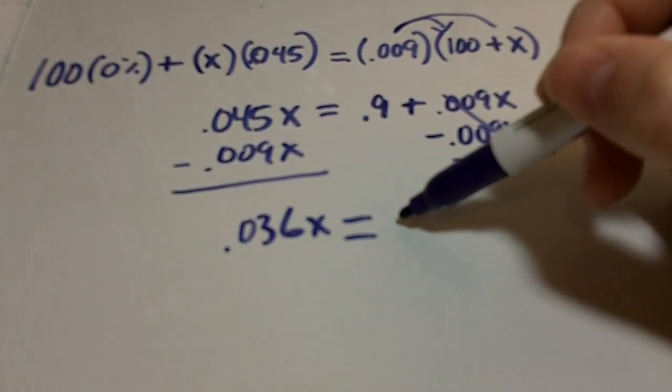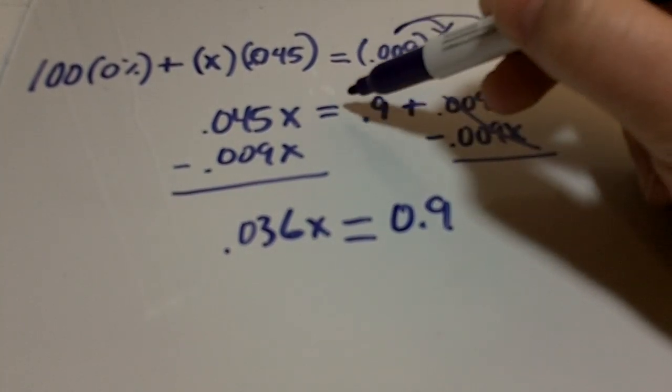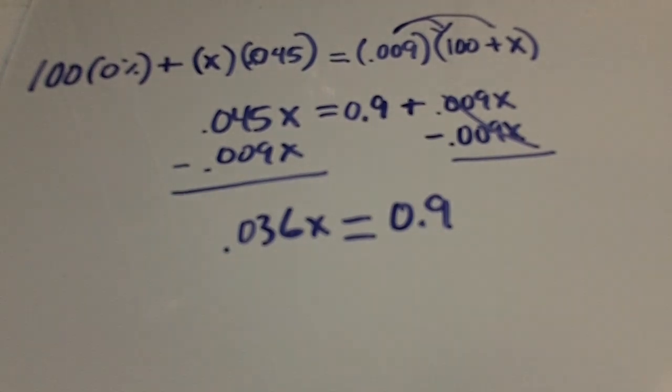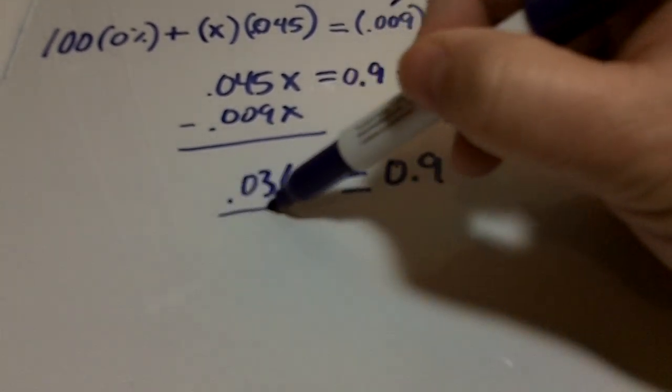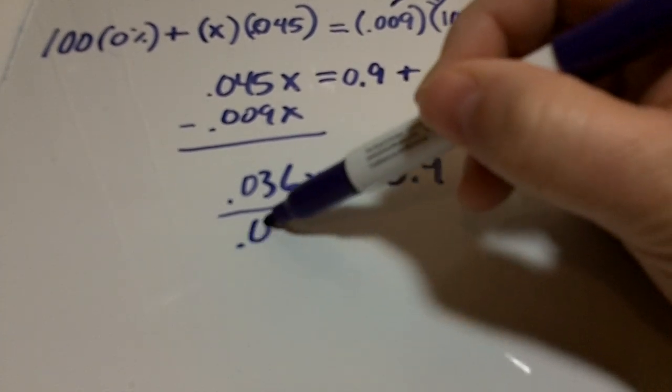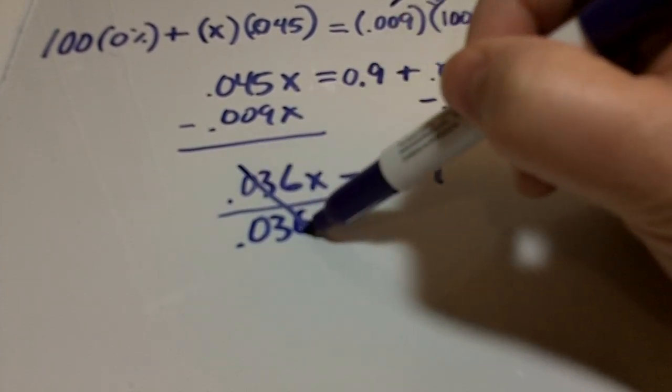equals 0.9—and you should be writing these zeros in front of your decimals, just keep everything nice and straight. Okay, so to isolate this x we divide it by 0.036 and that cancels it.